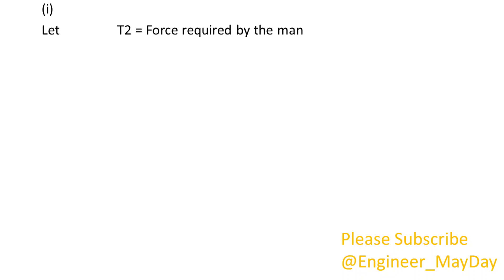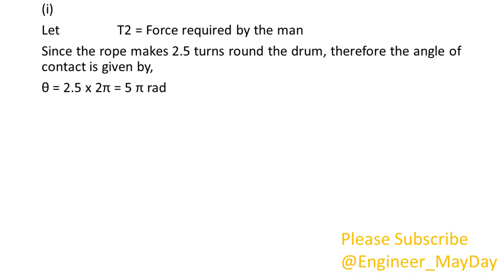1. Let T2 equals force required by the man. Since the rope makes 2.5 turns round the drum, therefore the angle of contact is given by theta equals 5 pi radians.